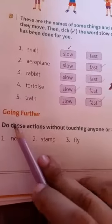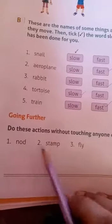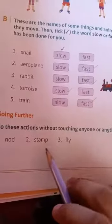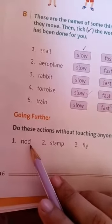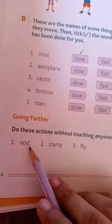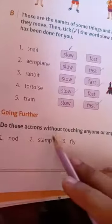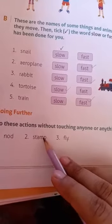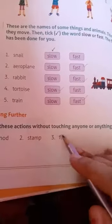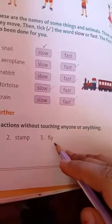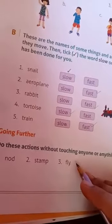Next is going further. Do these actions without touching anyone or anything. Number 1 is nod — nod is an action you show by moving your head left and right. Number 2 is stamp — do the action of stamp without touching anything. Number 3 is fly — you have to fly without touching anyone or anything. Here we have finished the poem and the exercises.